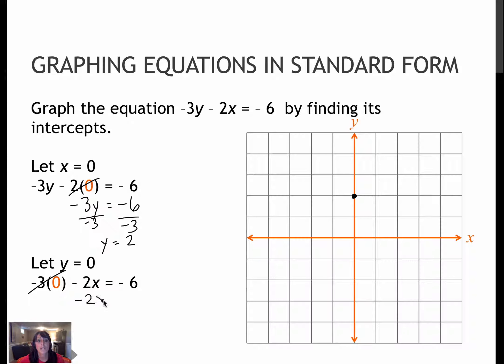And then, if I let y equal 0, that's -3(0), which is 0, gives me -2x = -6, so x is 3. So that's the point here at 3.